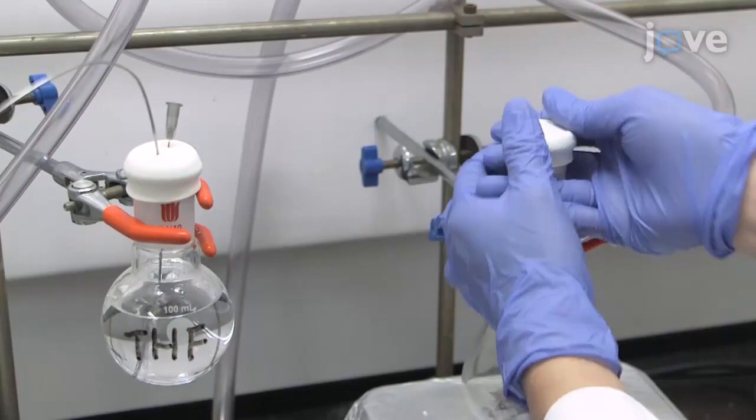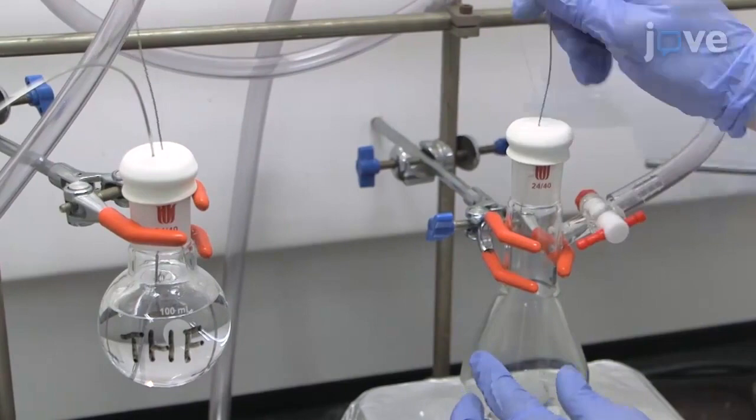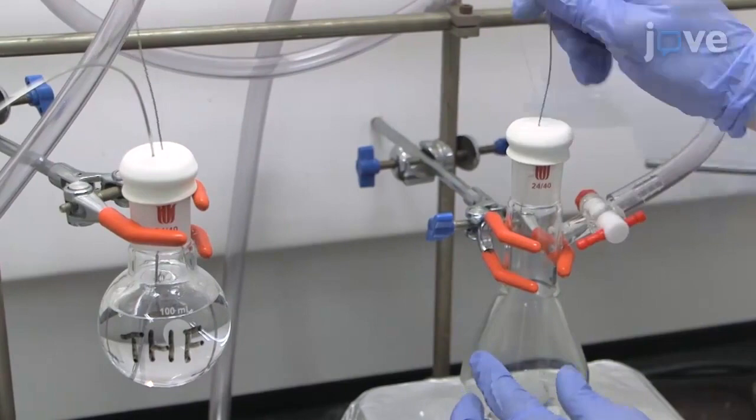Add 80 milliliters of anhydrous air-free tetrahydrofuran to the flask via cannula transfer. Then draw 14.5 grams of anhydrous air-free tetrahydrofuran to the flask via cannula transfer.